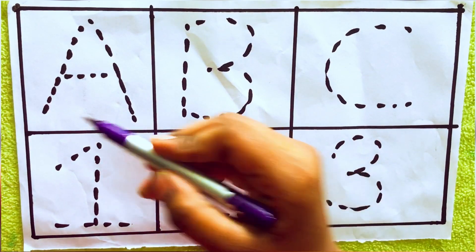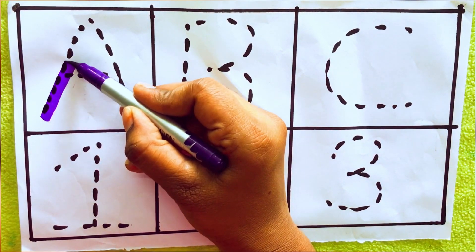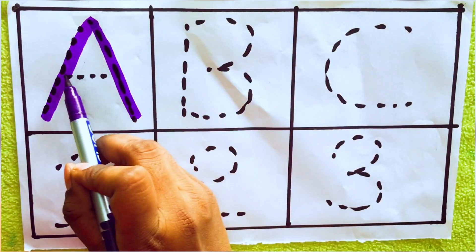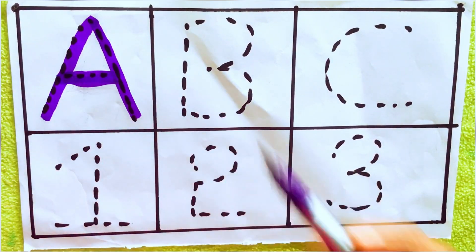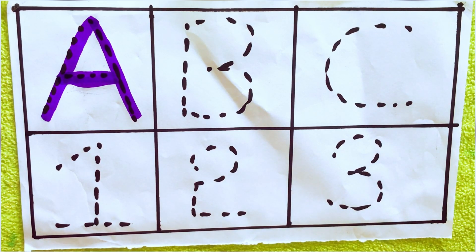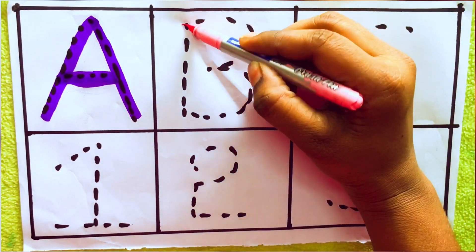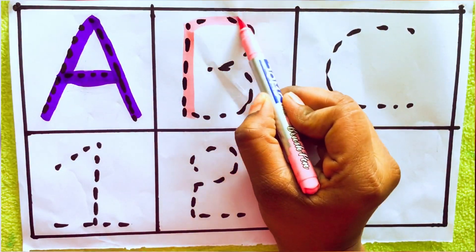Okay, let's draw violet color A, A, A for apple, A-P-P-L-E, apple. Pink color B, B for ball, B-A-L-L, ball.